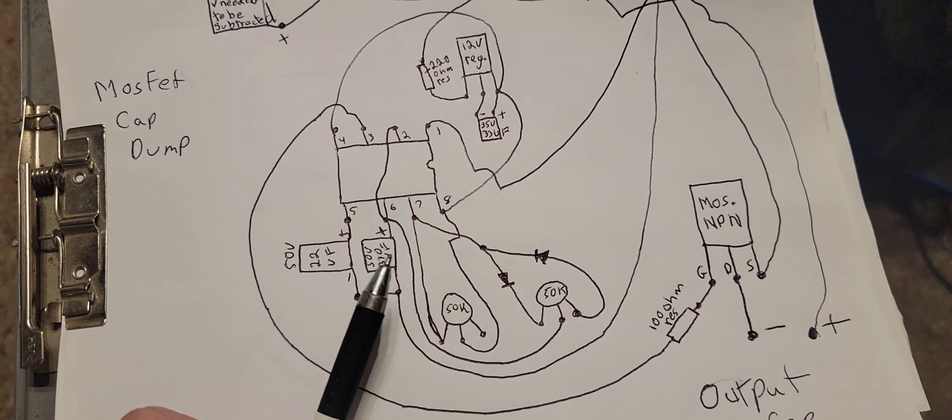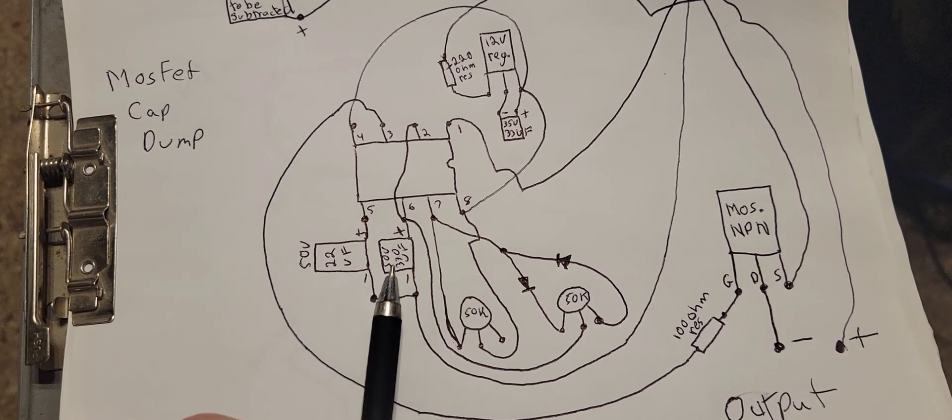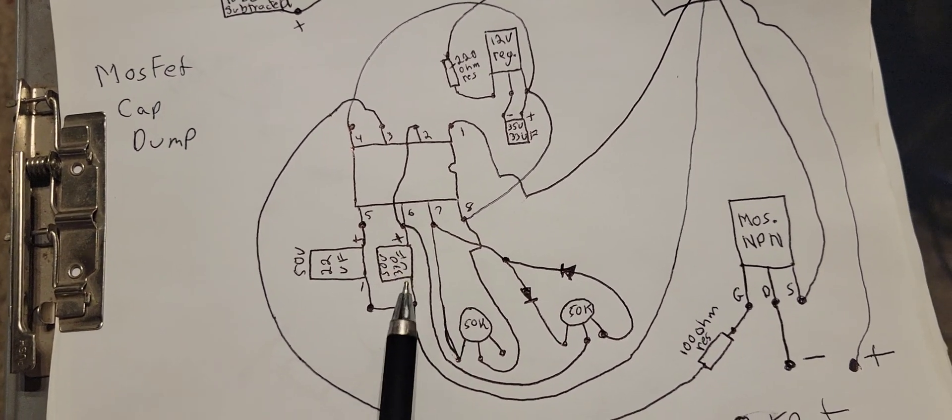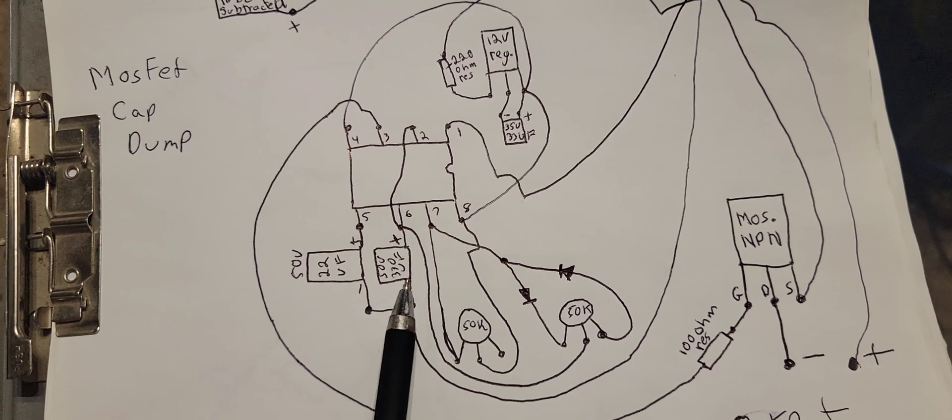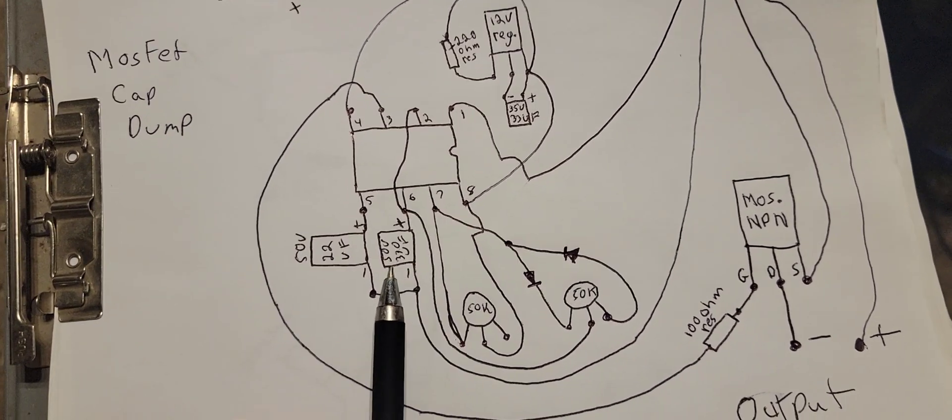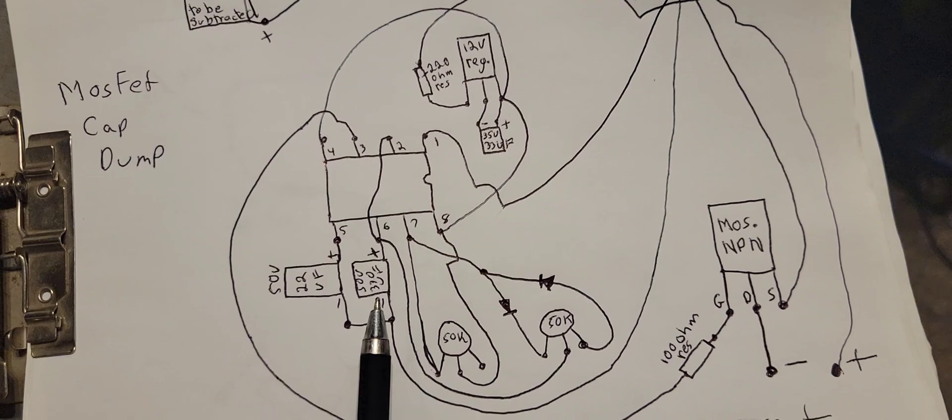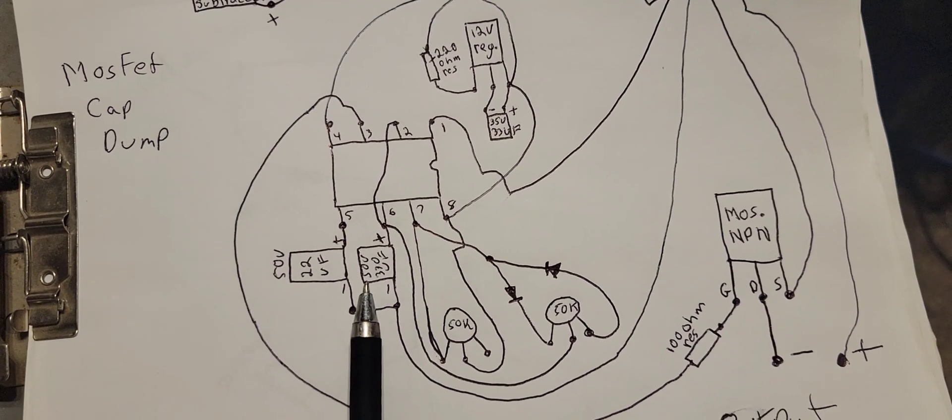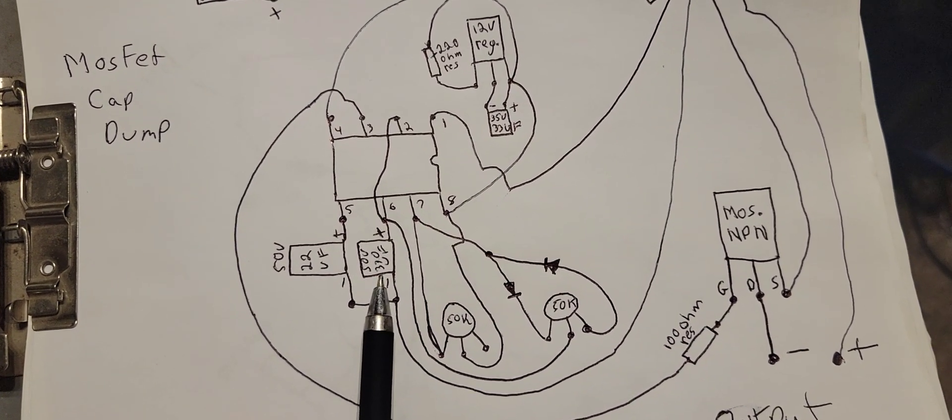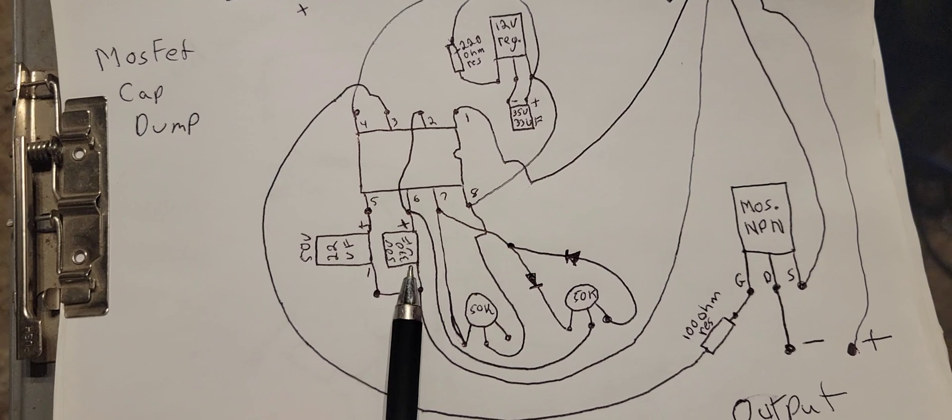And then for your pulse width and stuff like that, this is the key to changing right here. You want a longer one, you put a bigger cap. You can bring this down about 35 volts with a higher value. That works pretty good.